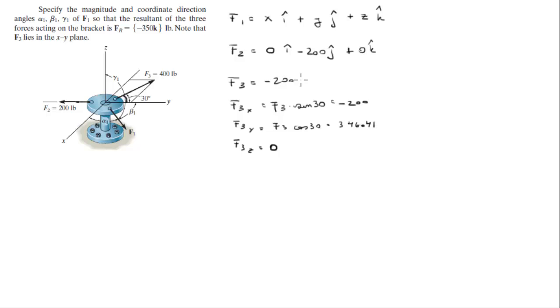So F3 equals negative 200i plus 346.41j plus 0k. We got our F2 and F3. F1 we're trying to find and we got FR already because it was given to us: 0i plus 0j minus 350k.